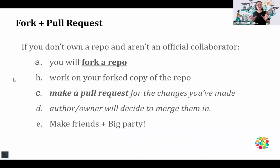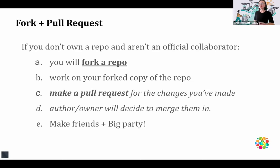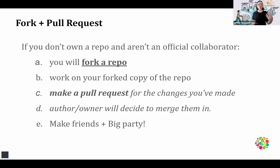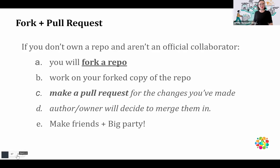This is an overview of how this happens in most open source projects. If you don't own the repository, this is most likely the process you'll follow: you see a repo, you want to contribute, you fork that repository, make the changes you want to make, then make a pull request for those changes back to the original repository. Then the author, owner, or in the Turing Way's case other contributors will review, comment, and make a call on whether your changes will be merged into the main repository. And then finally — make big friends and have big parties, which is what the Turing Way is all about.